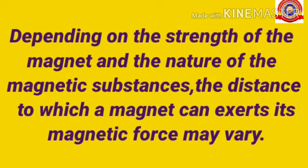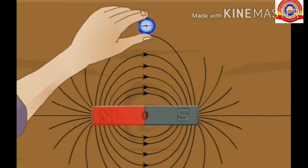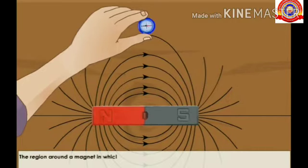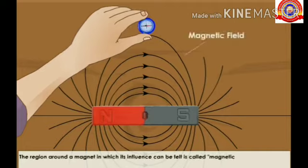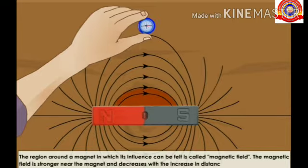Next we are going to discuss about magnetic field. The region around the magnet where the force of the magnet is felt is the magnetic field. The magnetic field is stronger near the magnet and decreases with the increase in distance from the magnet.